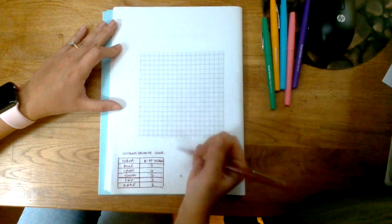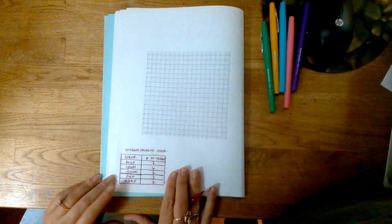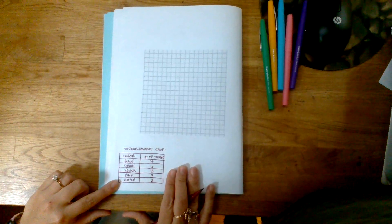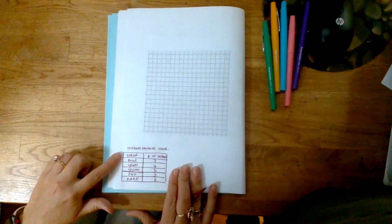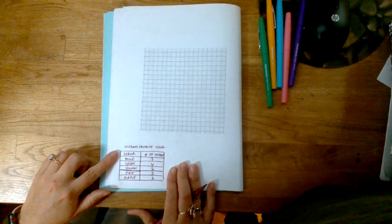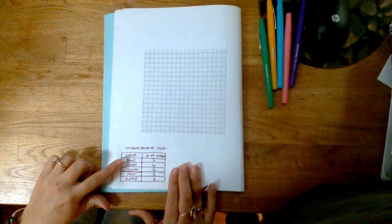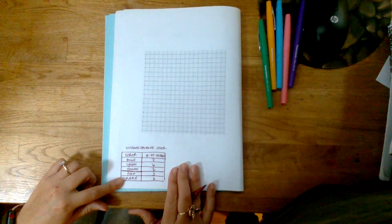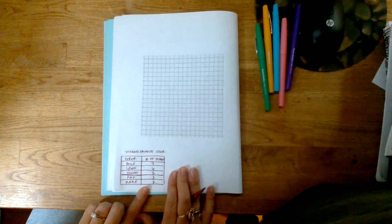First, let's take a look at this little data table that we made over here. I asked 20 students what their favorite color was, and they had to pick between blue, green, yellow, pink, and purple. This was the data that I collected on the number of students for each color.